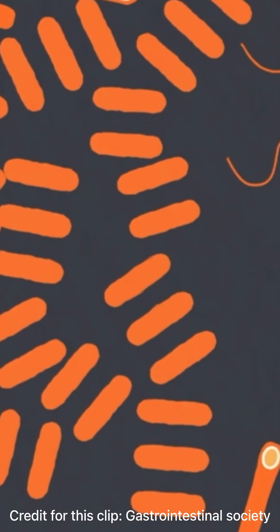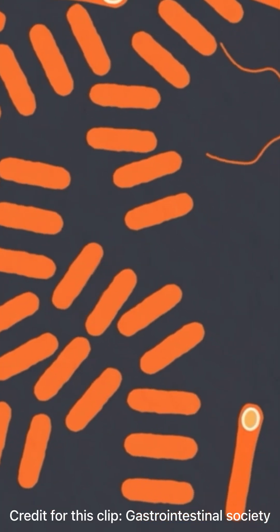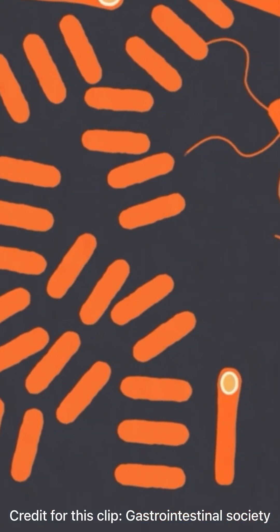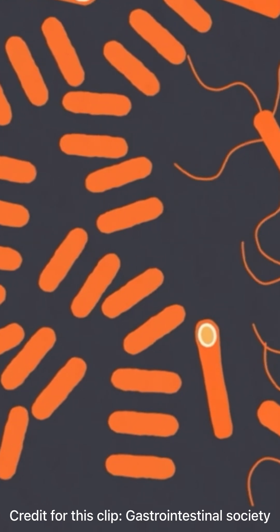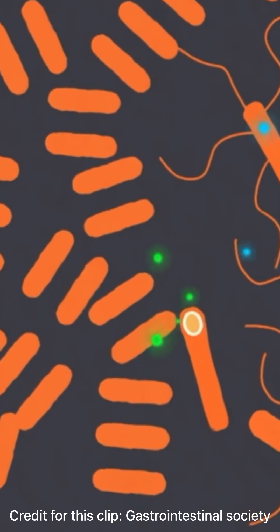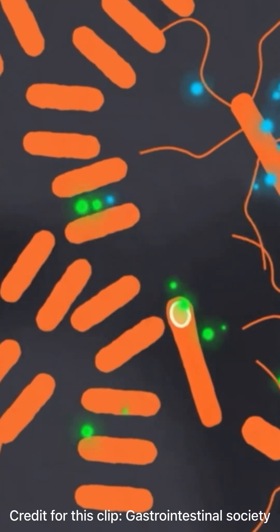This disruption allows opportunistic bacteria like Clostridium difficile to overgrow and produce toxins that attack the lining of the intestine, leading to diarrhea.